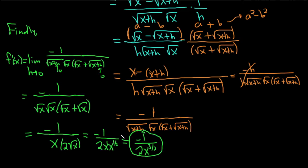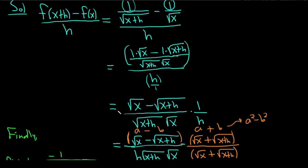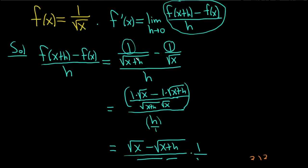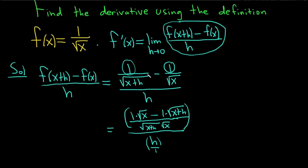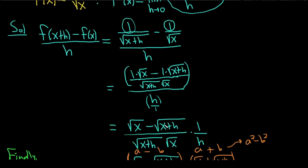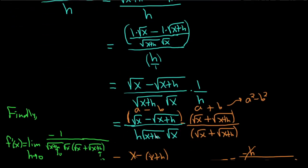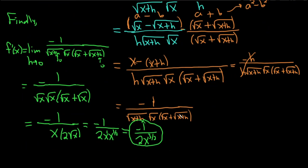That was quite a bit of work compared to other derivative problems. As a quick recap, the approach was: first perform the subtraction to get the difference quotient, then rationalize the numerator, and after that step everything works out nicely. I hope this video has been helpful.